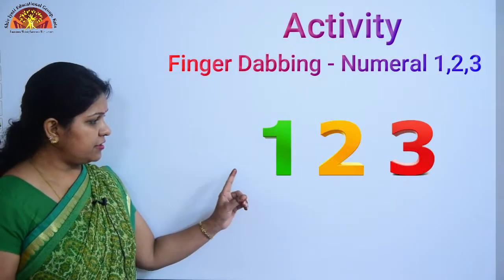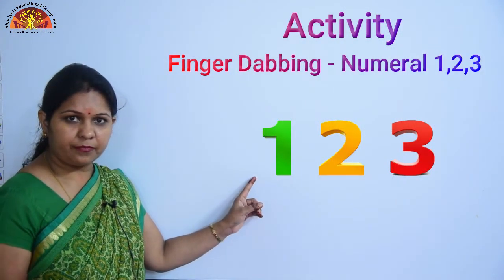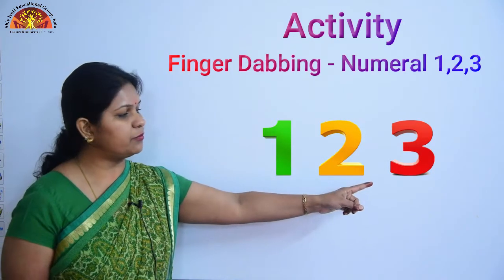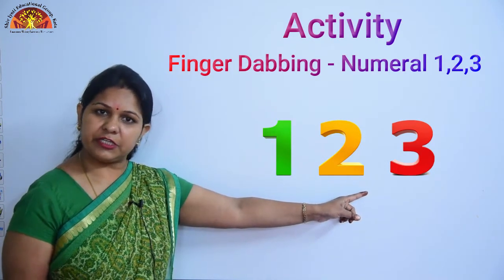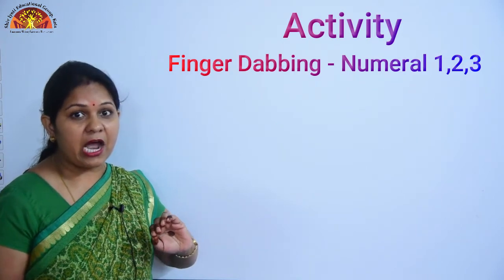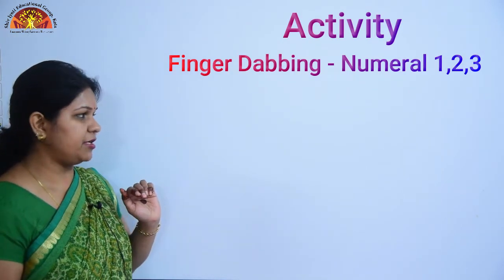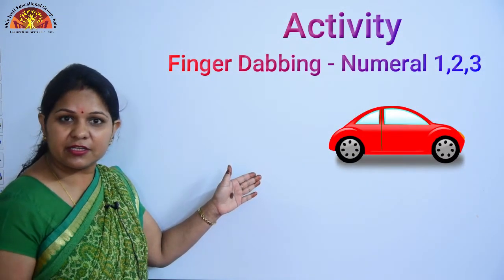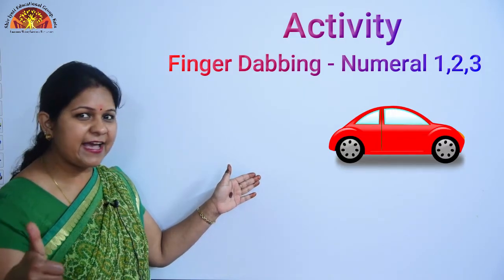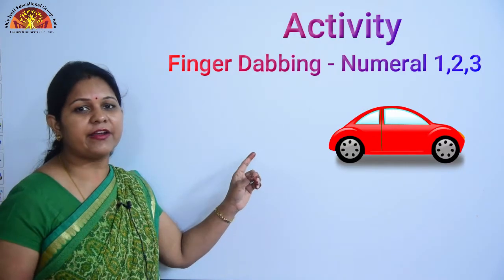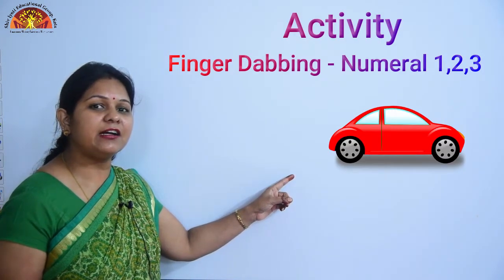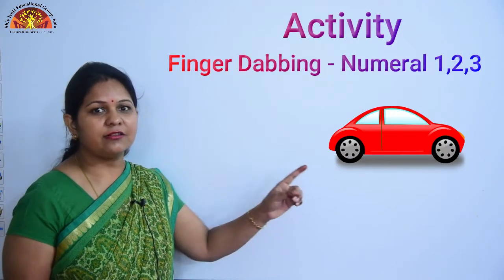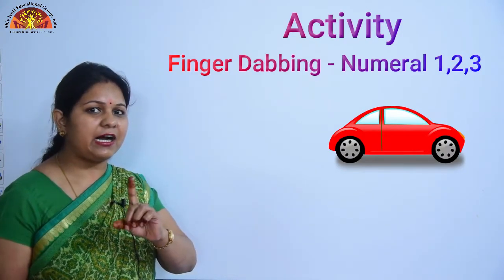Kids, this is numeral 1, numeral 2, and this is numeral 3. Now tell me, how many cars are there? Yes, there is one car. How many cars are there? There is one car.